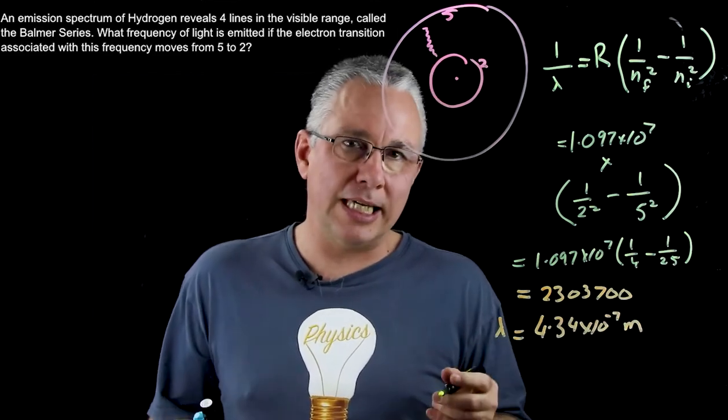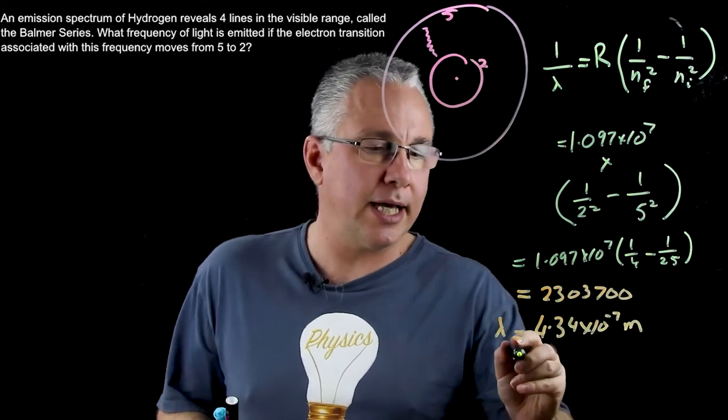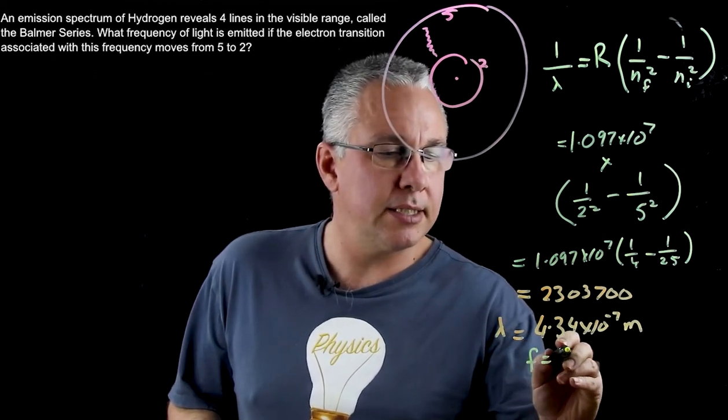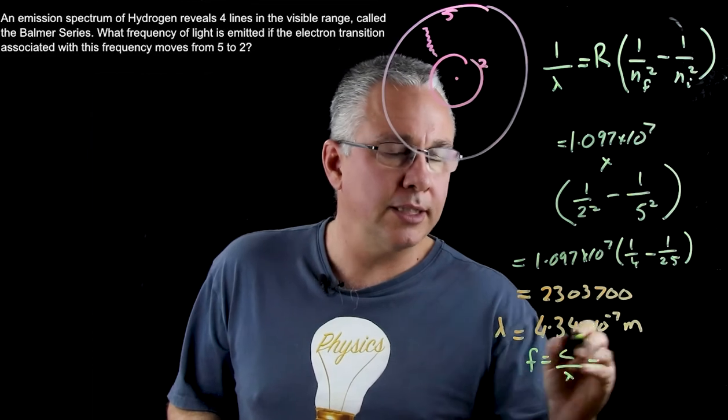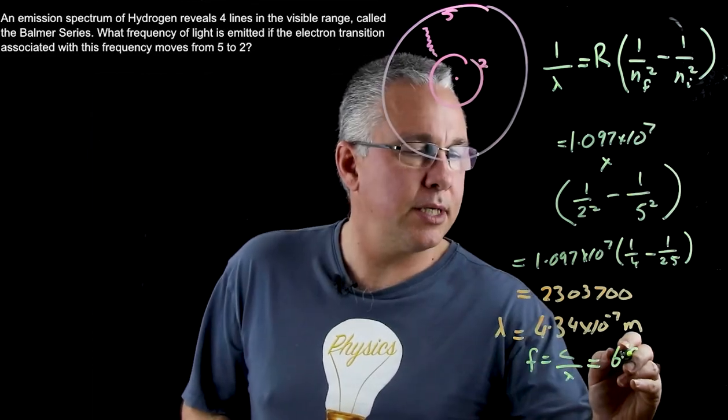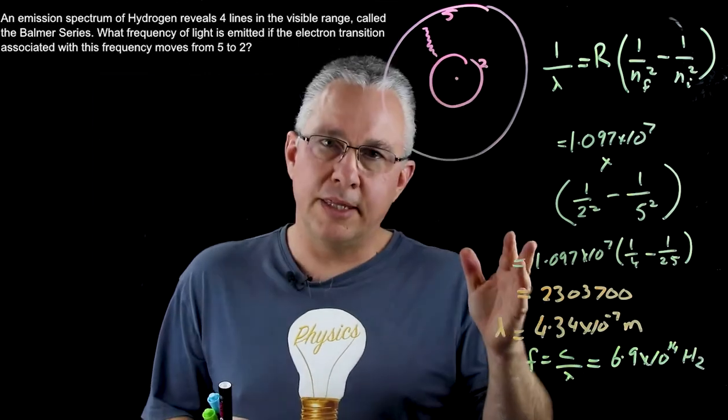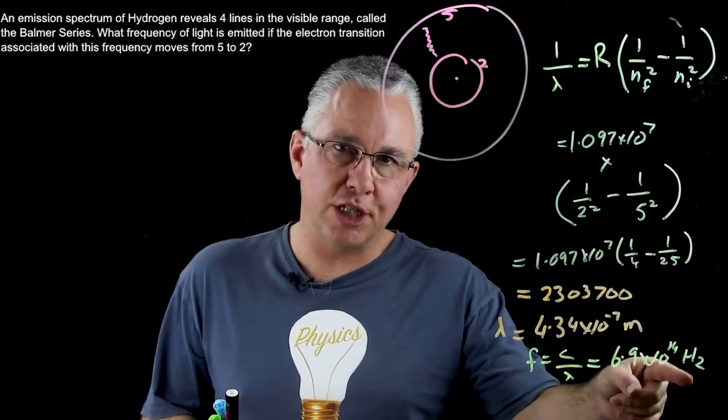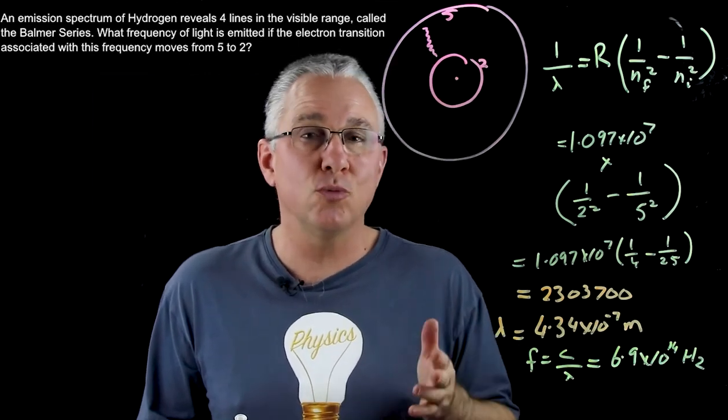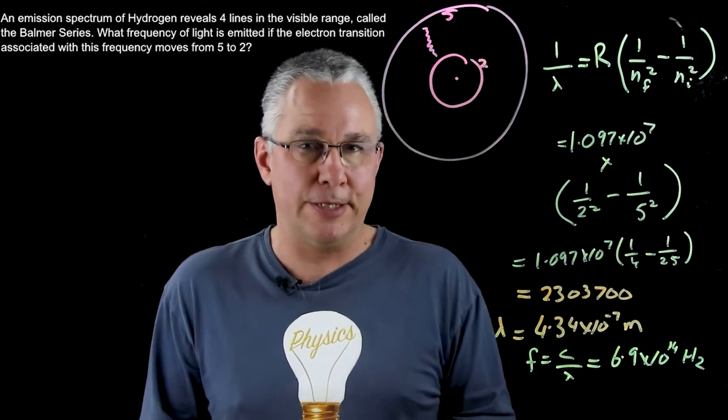If I now use c equals f lambda, I can work out the frequency being c over lambda, and I'm going to get a value of 6.9 by 10 to the power of 14 hertz. And this particular wavelength and its corresponding frequency corresponds to one of the absorption lines in the Balmer series for hydrogen.